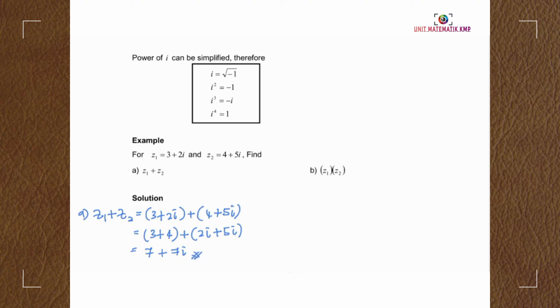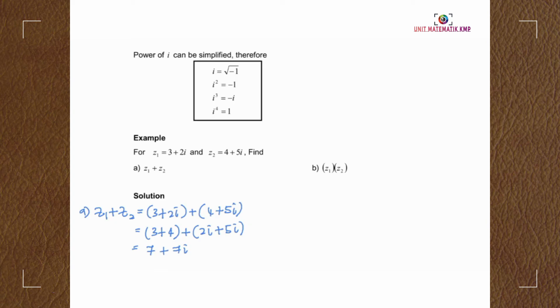Same goes for the subtraction. For example b, we have a multiplication of 2 complex numbers.